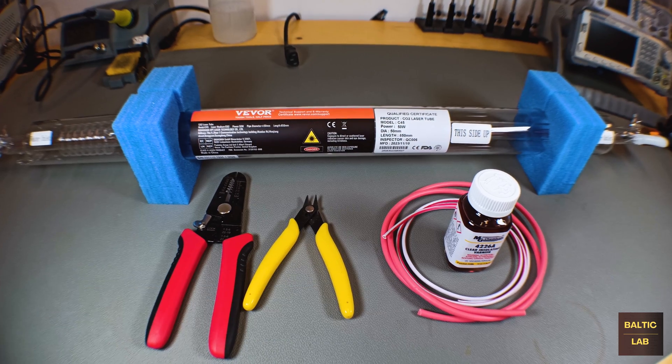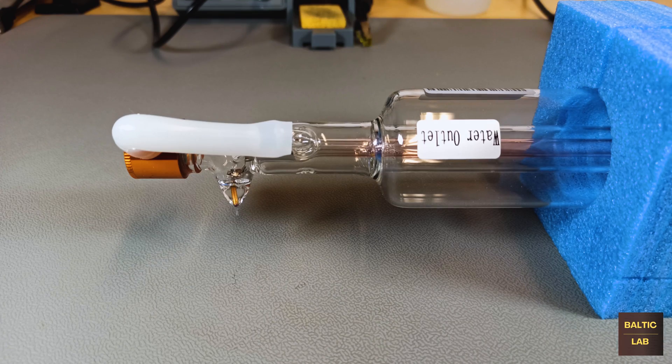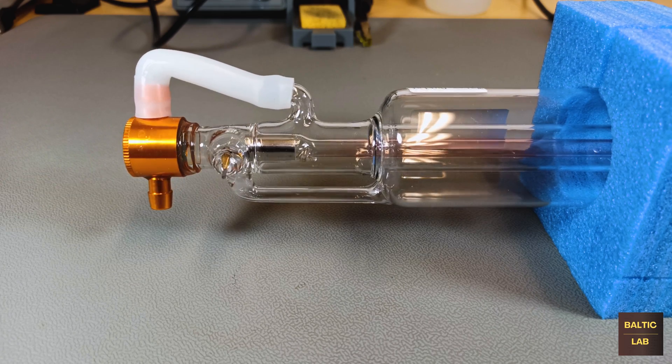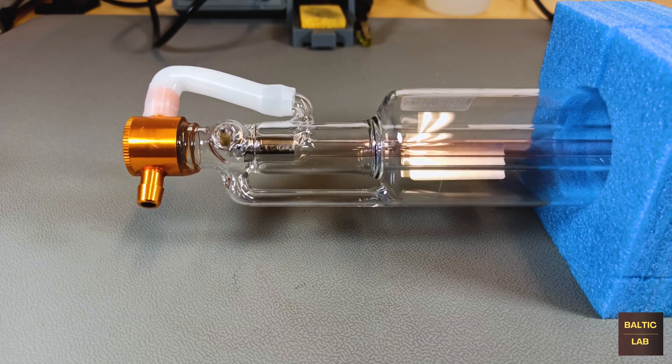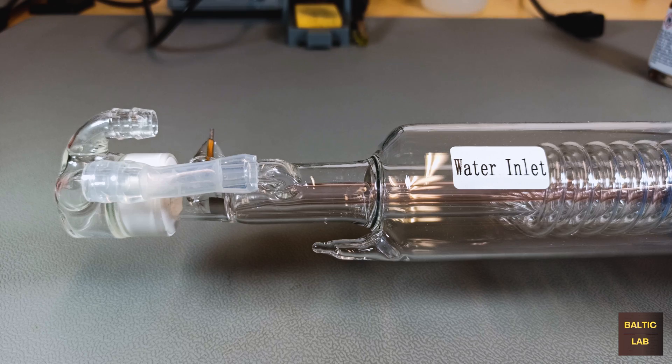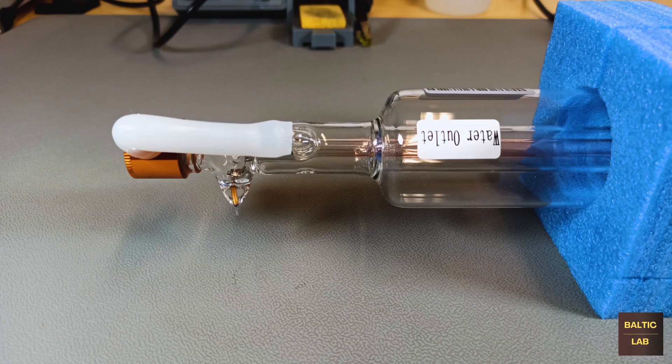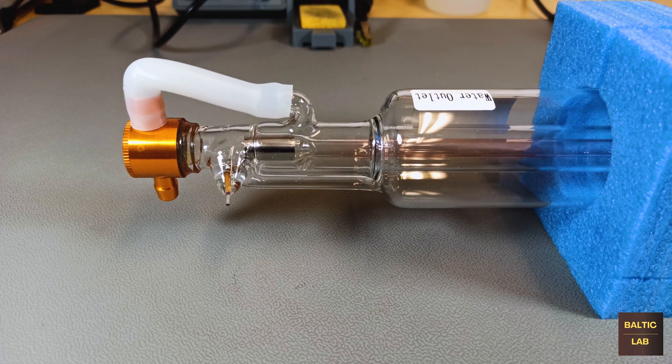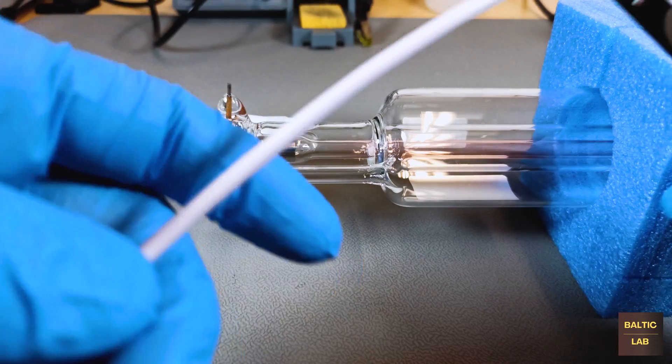I decided to start the wiring process with the cathode which means the negative electrode. In order to identify which side is which it's actually quite easy. You can consider the tube having an output side and an input side. The output side is where the laser light comes out, the water comes out and where the electricity comes out.